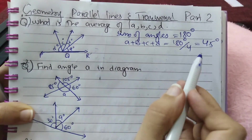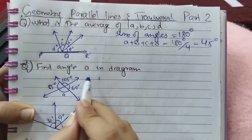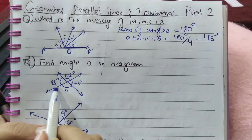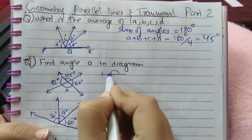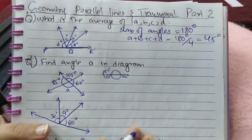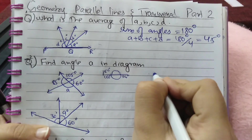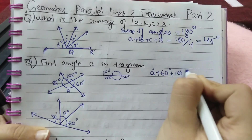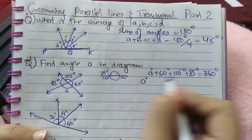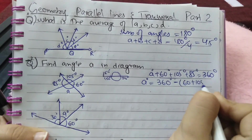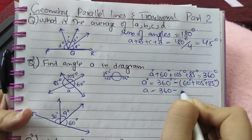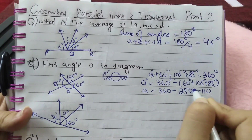A, B, C and D are each 45 degrees and their sum is 180 degrees. Next question: find angle A in the diagram. The complete angle on one side is 180 degrees, and from the other side it also completes 180 degrees, so 180 plus 180 is 360 degrees. So the sum of all these angles equals 360 degrees: A plus 60 degrees plus 105 plus 85 equals 360 degrees. These terms move to the other side with sign changed; the sum of 60, 105, and 85 is 250, and 360 minus 250 is 110 degrees.